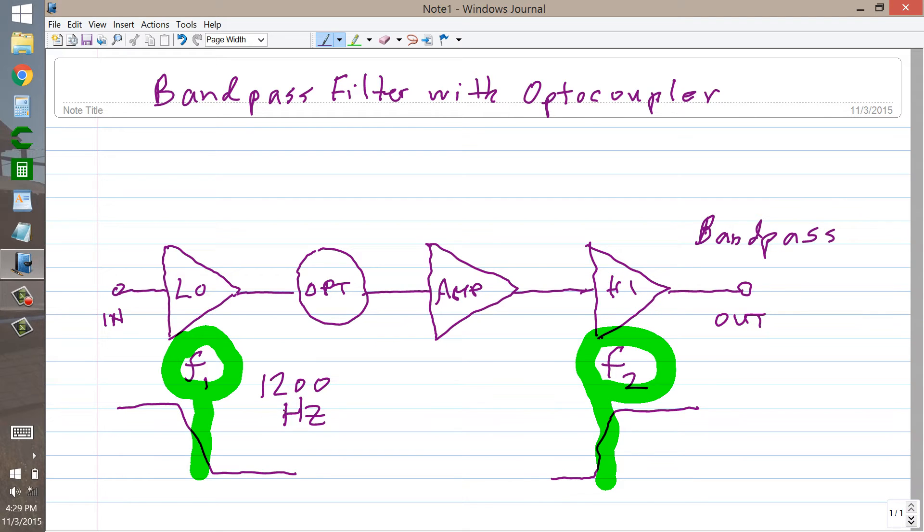So everything below 1200 Hz can get through pretty easily, anything above 1200 Hz only with great difficulty. Let's suppose then, too, that this frequency right here, F2, is 600 Hz.